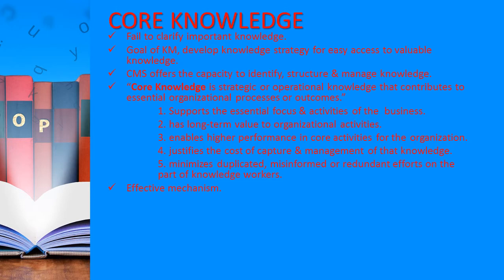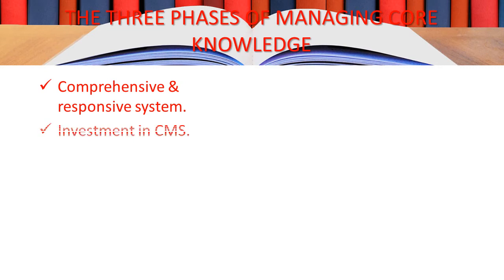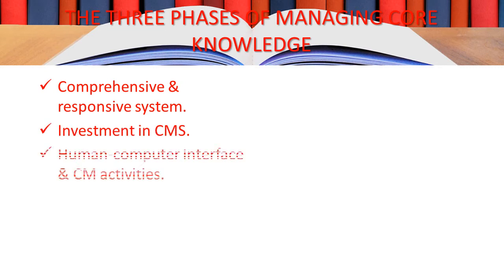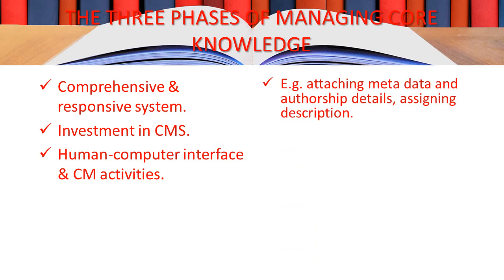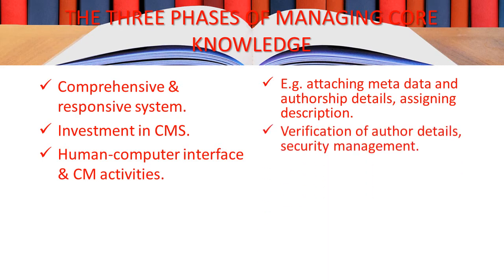However, the process of clarifying what is core knowledge can be challenging and time-consuming when first initiated. A Content Management System provides the opportunity to build a comprehensive and responsive system that brings expert organizational and explicit knowledge together in a cohesive and accessible repository. Investment in a CMS operates at a number of levels — resources are needed for technical aspects such as the human-computer interface, content management activities, registering contacts, attaching metadata and authorship details, assigning descriptors, verification, and security management. Developing a core knowledge framework is an important component of building an effective repository.